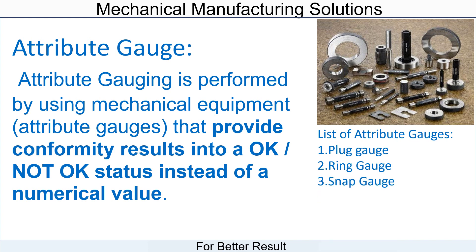The list of attributed gauges includes: plug gauges, ring gauges, snap gauges, slip gauges, and receiving gauges.